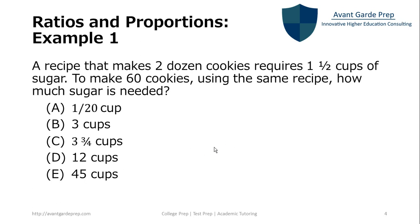This problem is asking how much sugar is needed for 60 cookies. And the initial ratio that we're given is dozens of cookies to cups of sugar. Because we have the second ratio of cookies to cups of sugar, we're going to have to convert that dozen of cookies or the cookies to the same units.